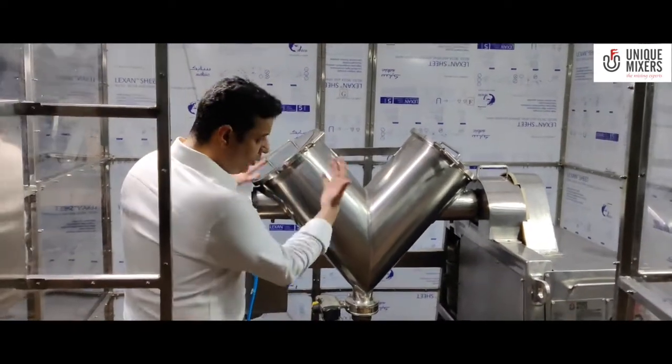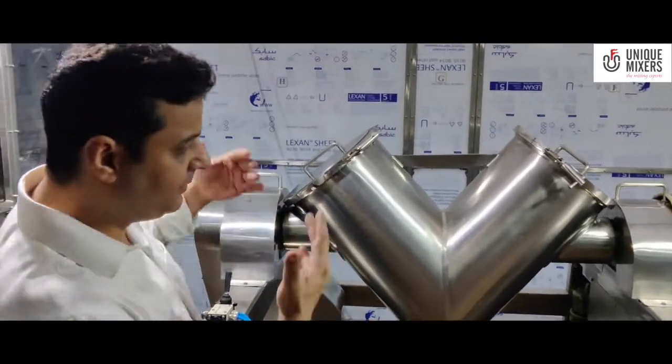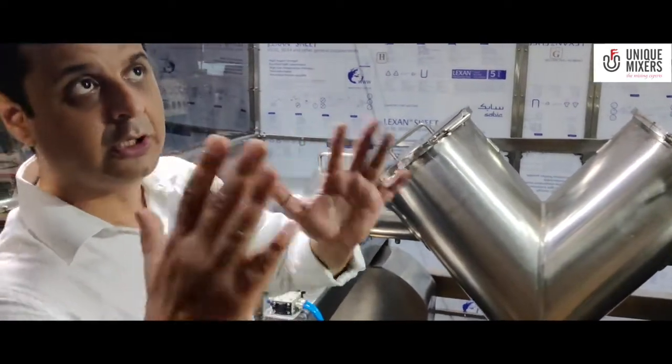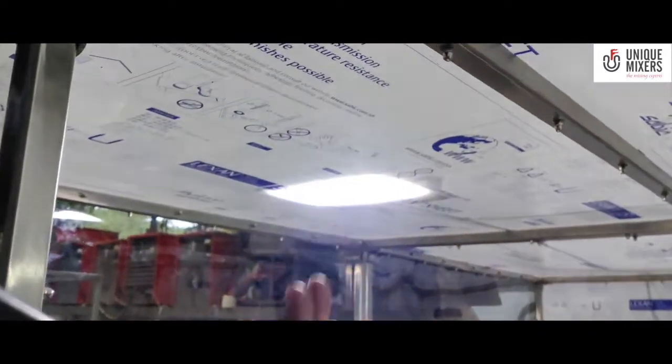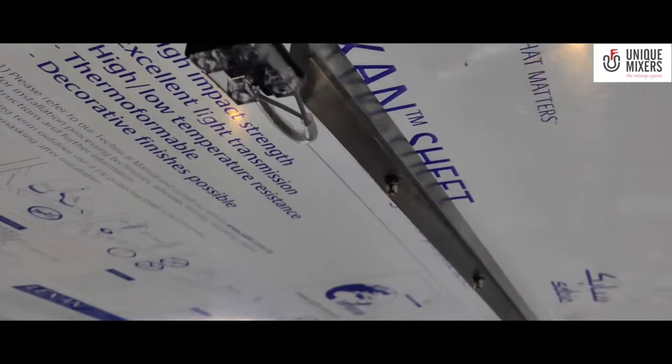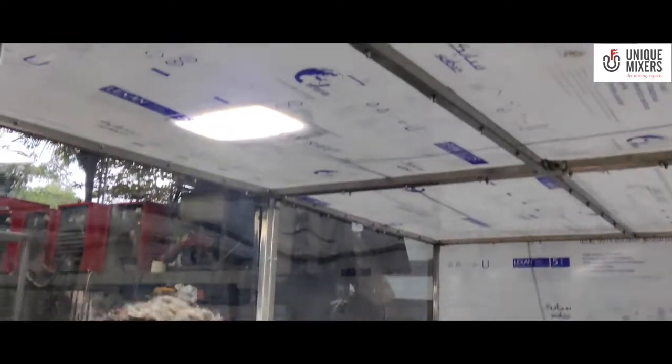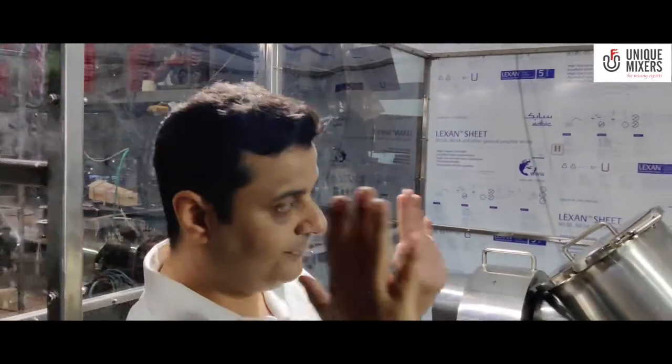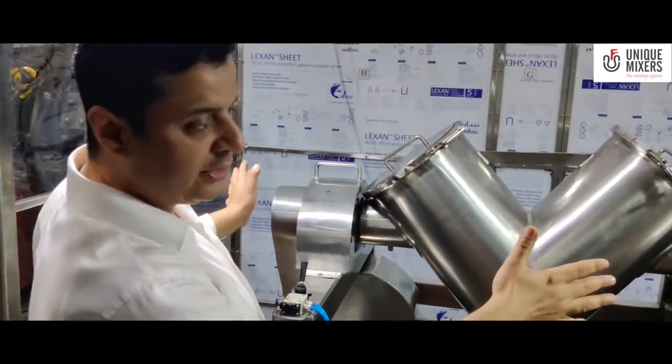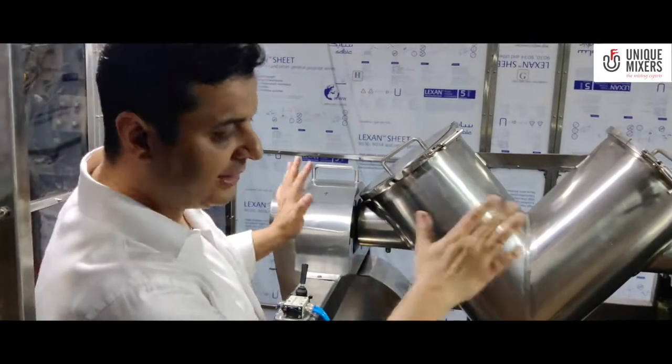I am standing here, while I am standing here the machine will not operate. For the machine to operate I need to go out, close the door. We have a safety switch right here. Once that safety switch is activated, that's when the machine will start. The moment I open the door the safety switch again will disconnect all electricals to the machine and the machine will stop.